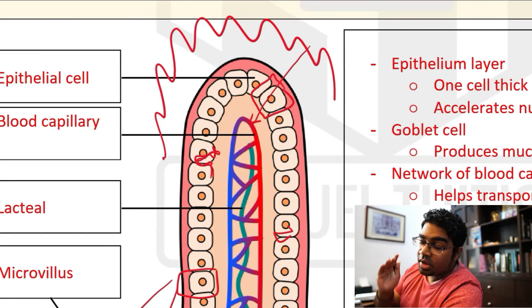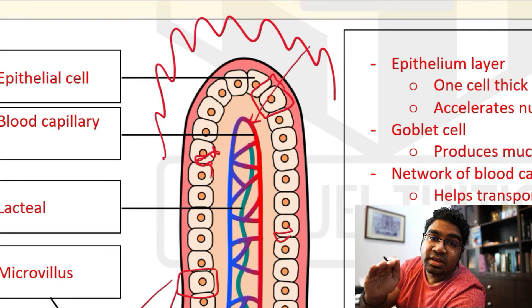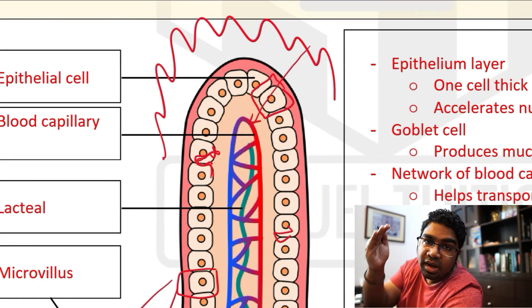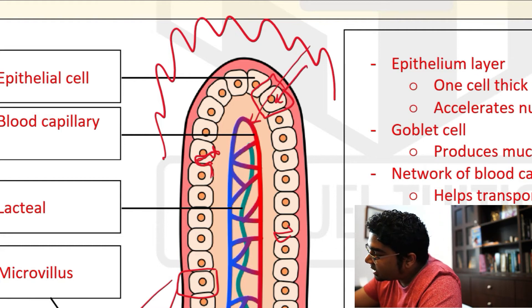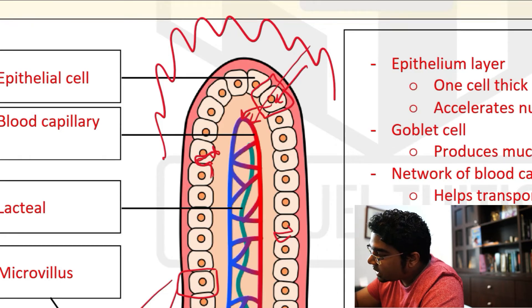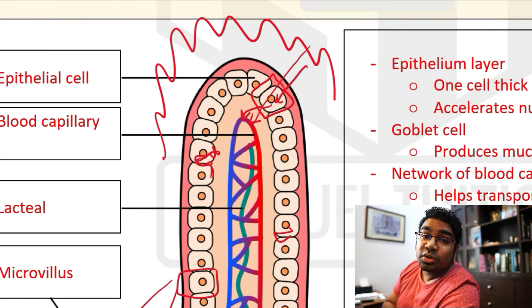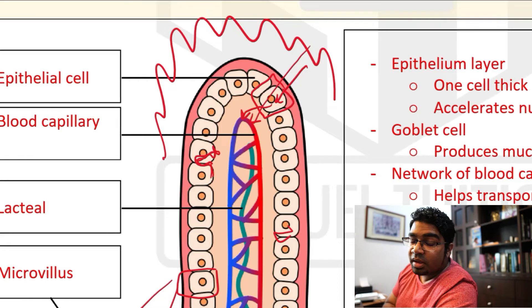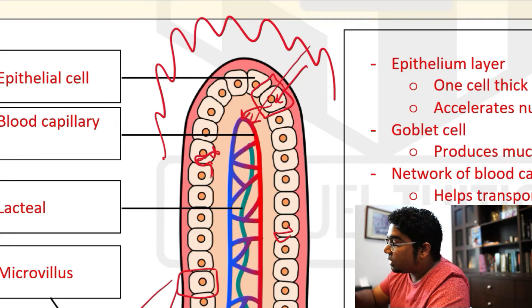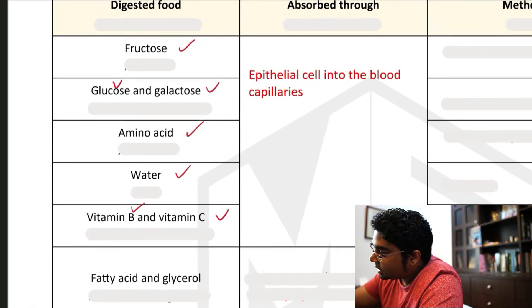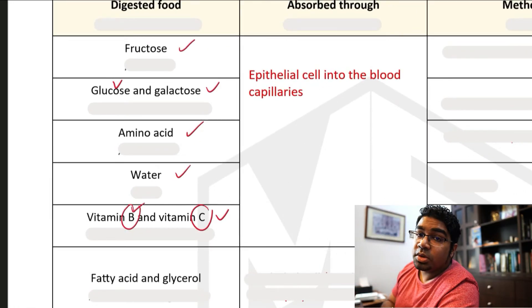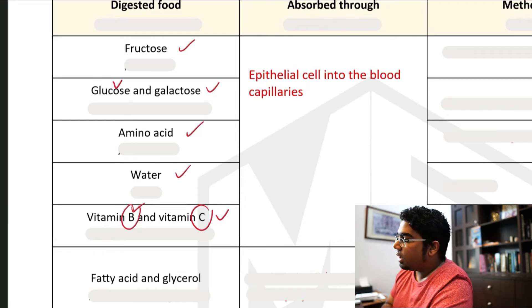So all these nutrients that I listed out earlier will go through the epithelial cell. They have to pass through the epithelial cell. So they have to diffuse into the epithelial cell because epithelial cell is the barrier. After diffusing into the epithelial cell, then it diffuses out into the blood, into the network of blood capillaries. And so this is what happens to all the water soluble substances here. And you can see, vitamin B and C here are water soluble vitamins.